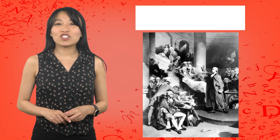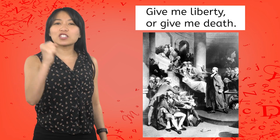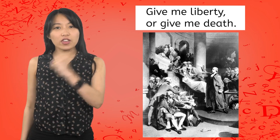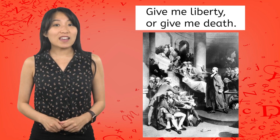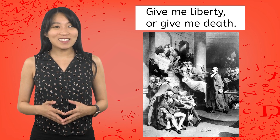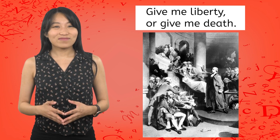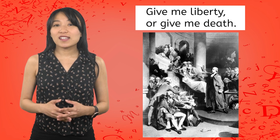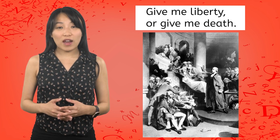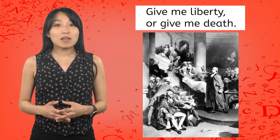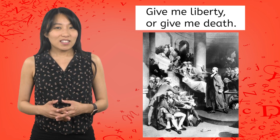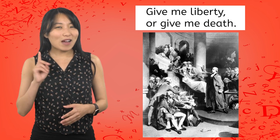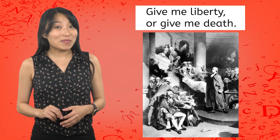A famous example of this comes from Patrick Henry's 1775 speech to the Virginia Convention: 'Give me liberty or give me death.' The drastic difference between these two concepts imparts a sense of urgency and action to the crowd. Used sparingly, antithesis is a powerful tool of rhetoric. I wonder what other powerful techniques the rhetorical kingdom has to offer?